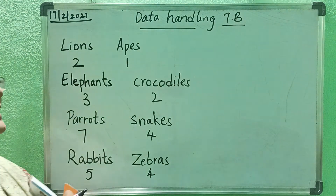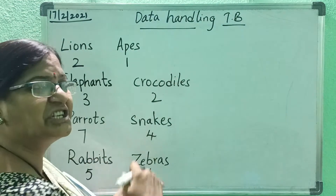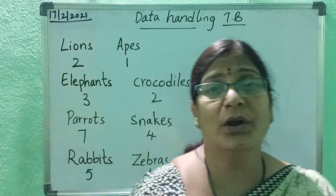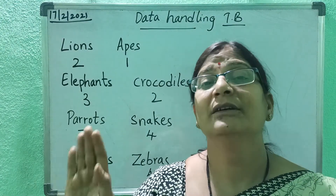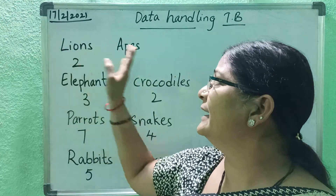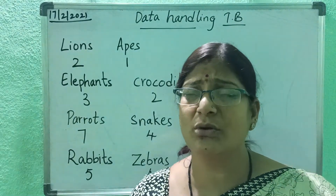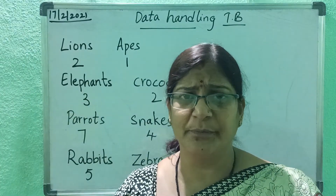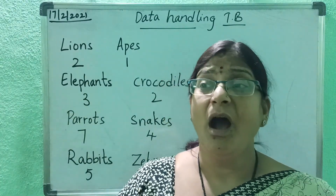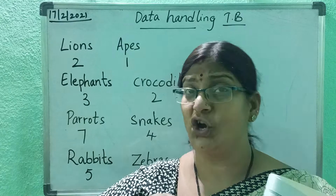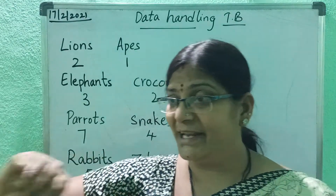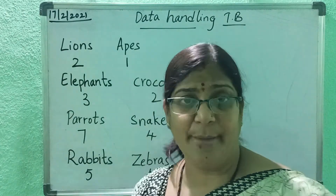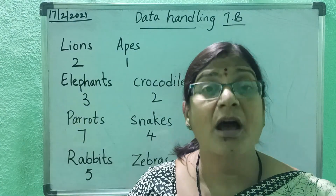Now, we have collected the information. There are some animals — lions, apes (chimpanzees), elephants, crocodiles, snakes, rabbits, and parrots. We have collected the information and sorted it as well — how many lions, elephants, rabbits are there. We have sorted everything.